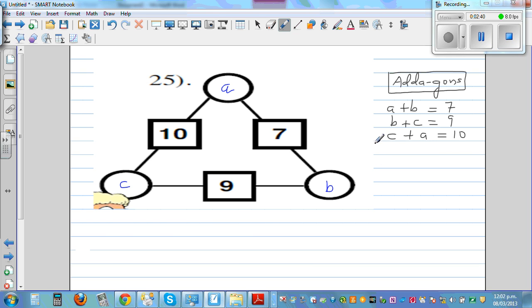So let's add them. So can I do A plus B plus B plus C plus C plus A if I'm adding both sides? You can do it in different ways. Plus C plus A is equal to. Now what is A plus B? A plus B is 7. What is B plus C? B plus C is 9 plus 10.